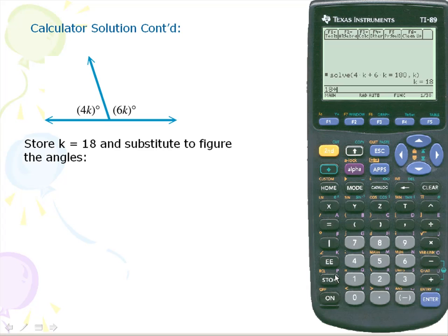We're going to store that for k. We'll simply lock it in with enter. And now we want to find the value of the 4k angle.